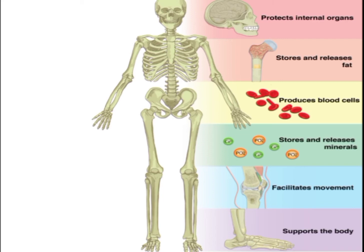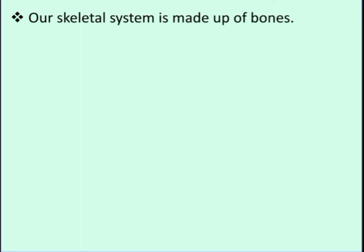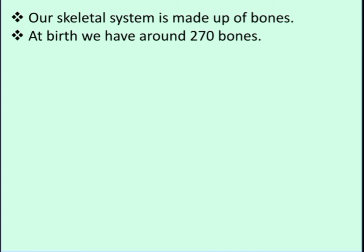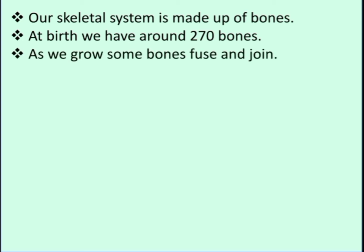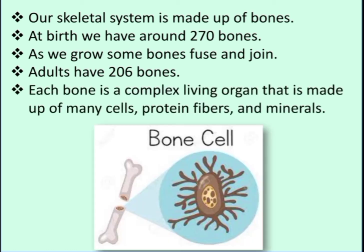This skeletal system is made up of bones. Do you know how a bone is made up — what material this bone is made of? Our skeletal system is made up of bones. At birth we have around 270 bones, but as we grow, some bones fuse and join together to make bigger bones, so adults have 206 bones. Each bone is a complex living organ made up of many cells, protein fibers, and minerals.